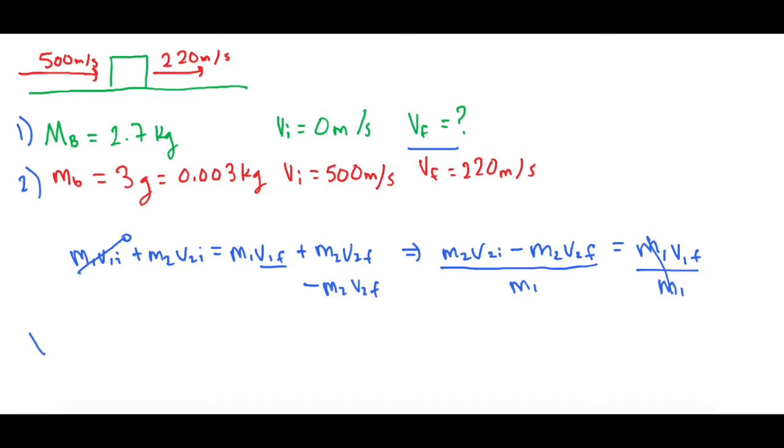So our final equation is V1 final is equal to M2 V2 initial minus M2 V2 final all divided by the mass of the block M1.